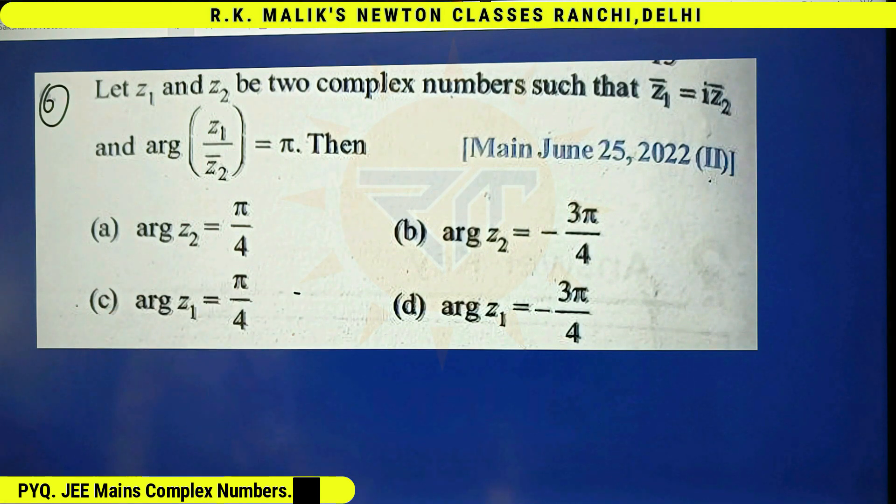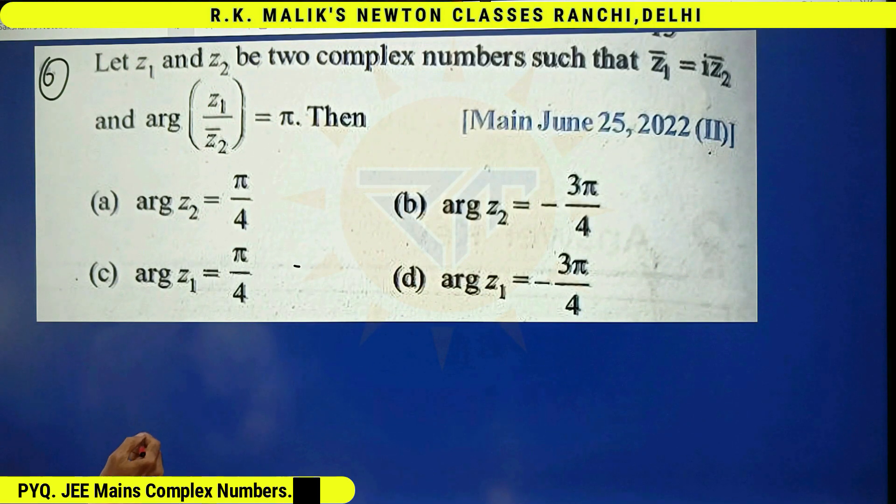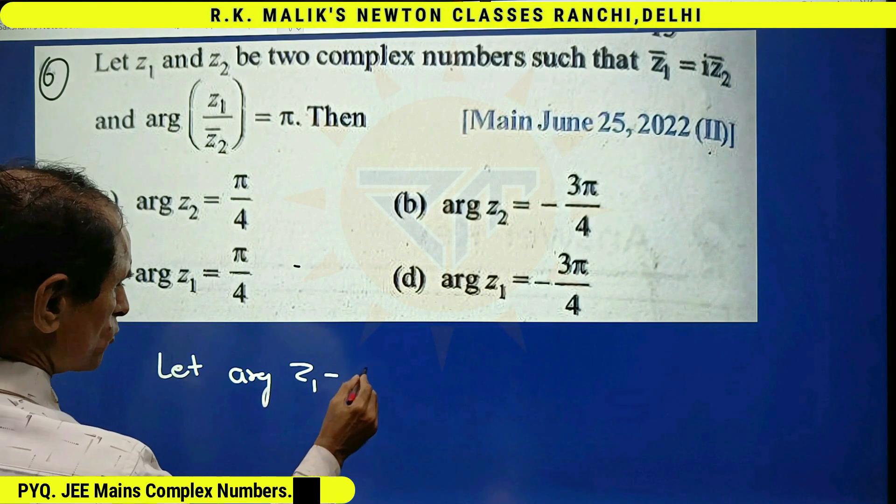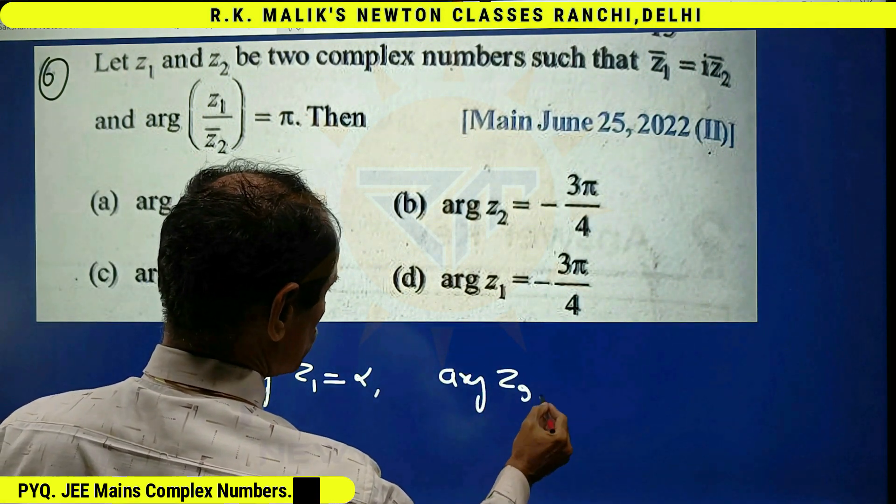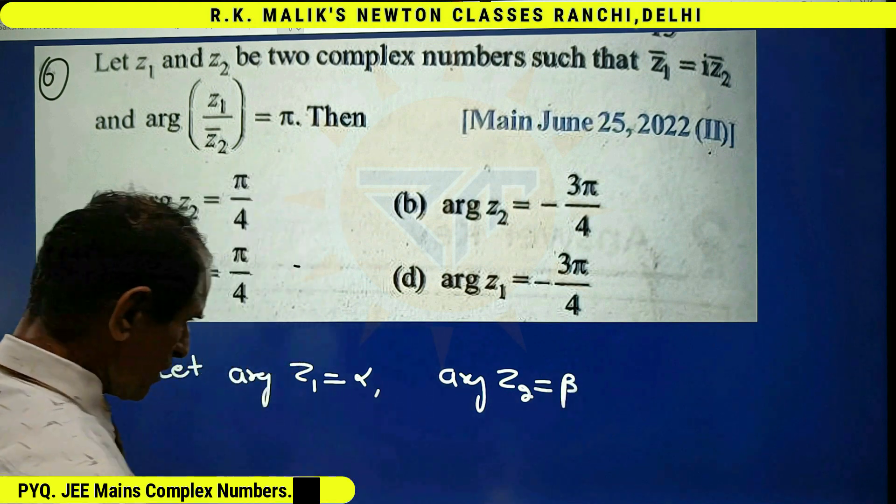Then you have to find the correct choice. To find the correct choice, let argument of z1 equal to alpha and argument of z2 equal to beta.